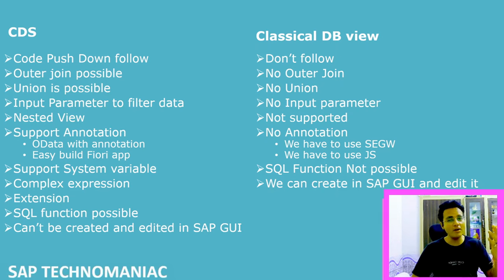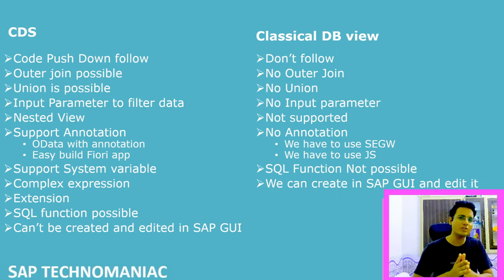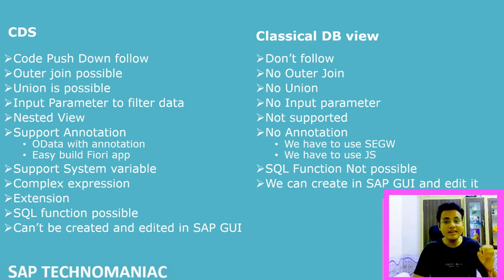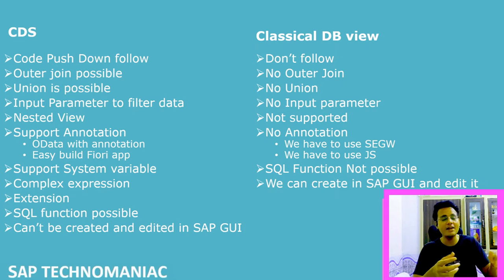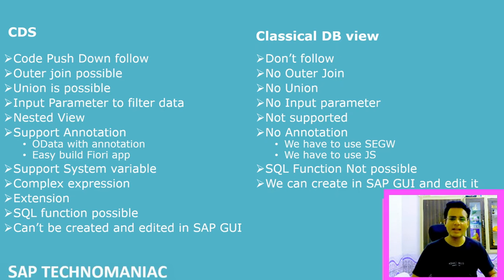Second: classical views support only inner joins — no left or right outer joins. In CDS, you can do inner joins, right outer joins, left outer joins, and also use associations. Additionally, union is not possible in classical views but is supported in CDS. You can create parameterized CDS views, which is not possible with classical views. You can also call a CDS view inside another CDS view, which was not possible before.